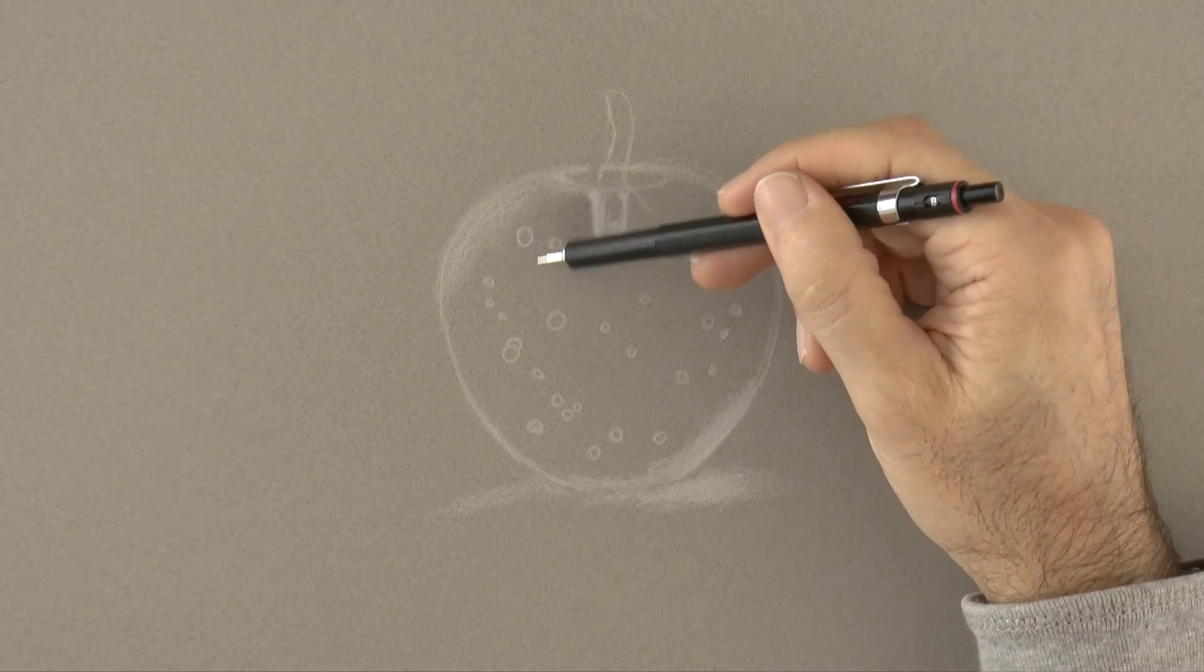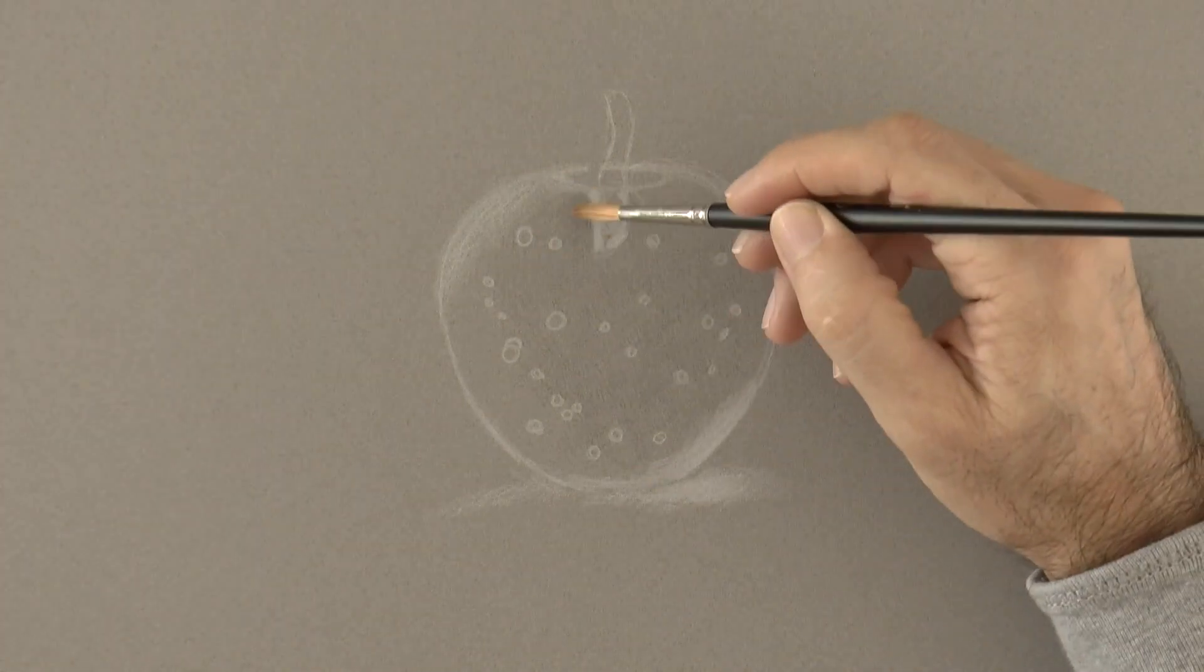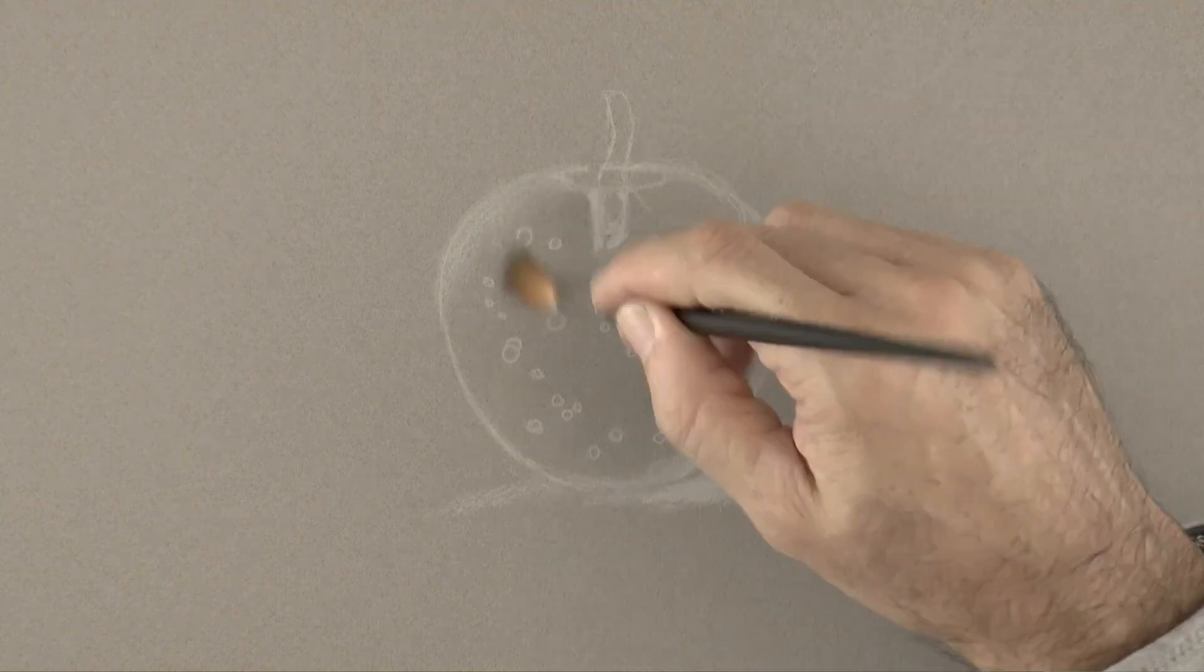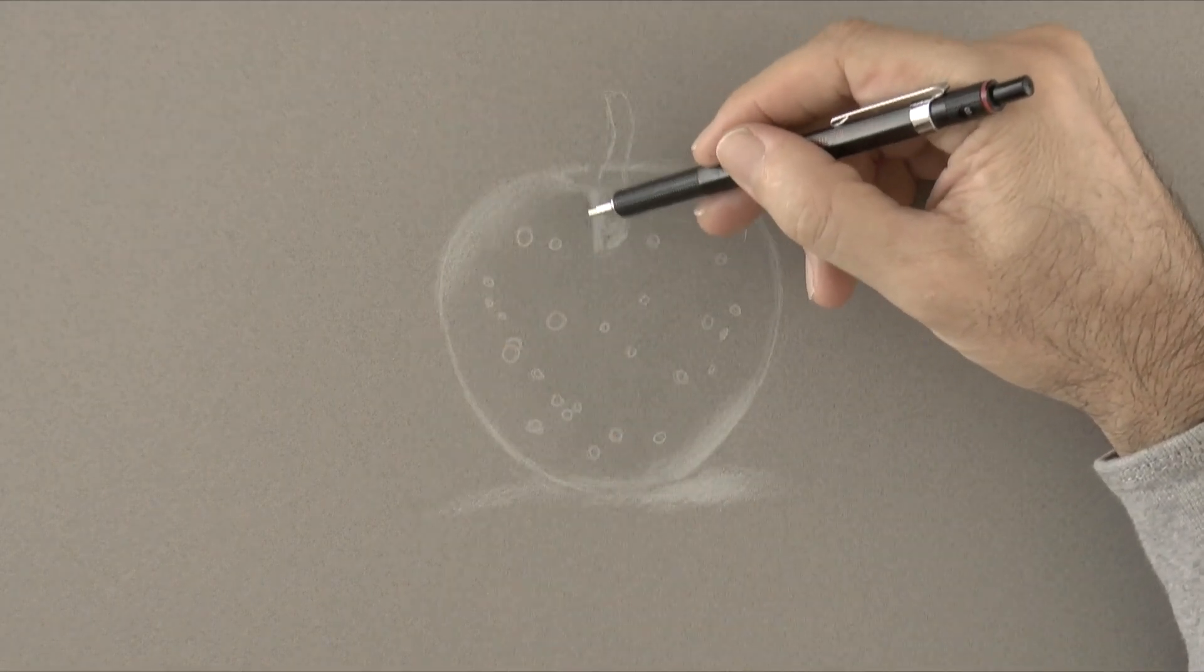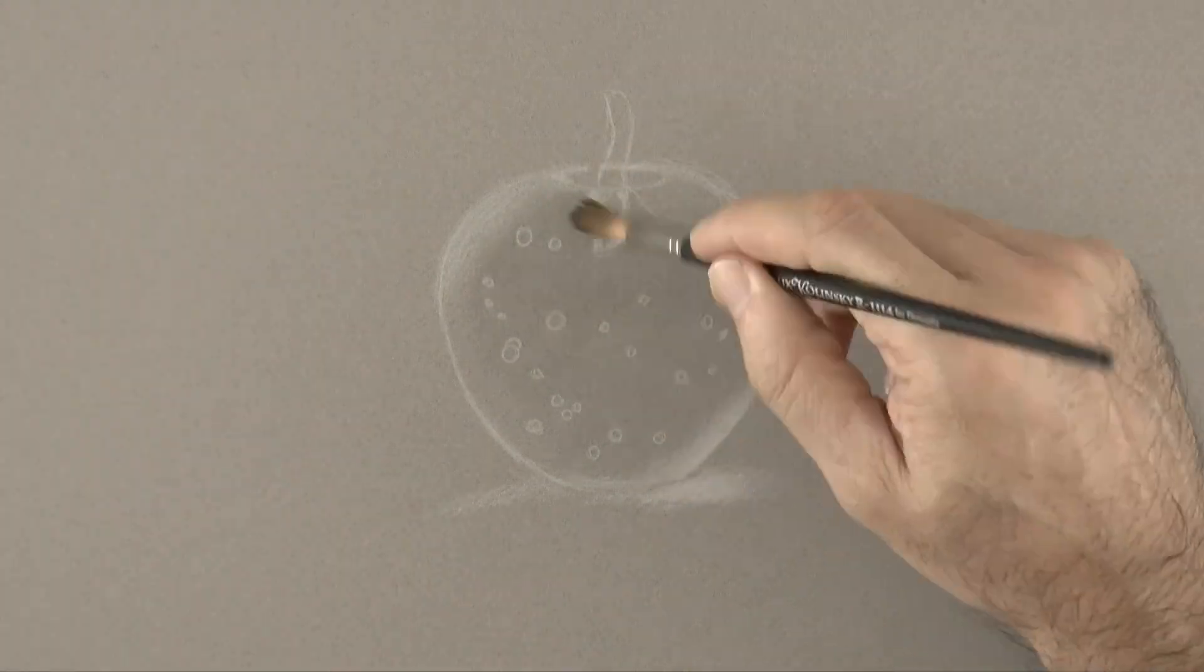With the mechanical pencil we create a shading and then we smudge it with a brush. Good! And we reinforce this area with a little bit more shading. We blur again and we continue working in the same way.